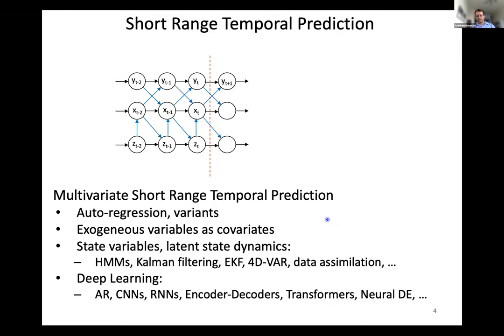Over the last five to seven years, deep learning models have come up — autoregressive models, CNNs, RNNs, transformers, neural differential equations. These deep learning models can be categorized into the three approaches we just talked about. Remember, this is all development for the short range, where you're trying to predict T plus one or T plus two or three — up to five, maybe. What we are talking about is long-range temporal prediction, where you have data up to point T and you're trying to predict Y at T plus capital T, like predicting the weather 30 days down the line.